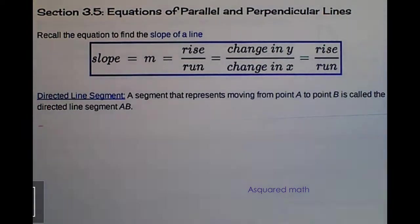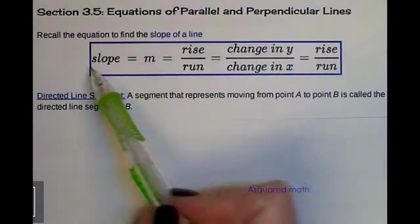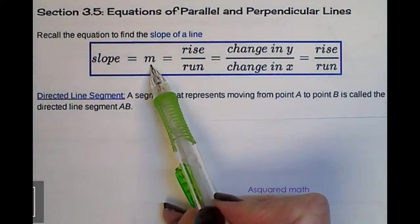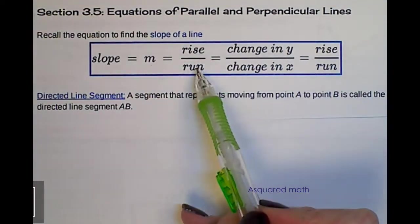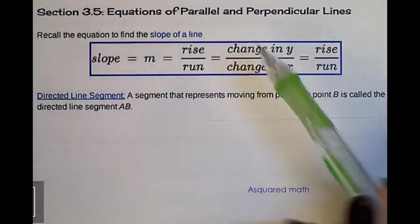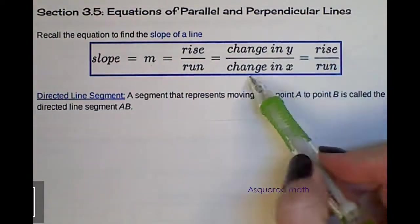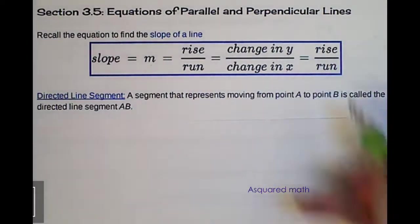This whole chapter has been about parallel and perpendicular lines, so today we're going to actually look at the equations of these two sets of lines. So what we need to do is review a little bit here, and if you recall the slope of a line is indicated by the letter M, and it is your rise over your run, or your change in y over change in x.